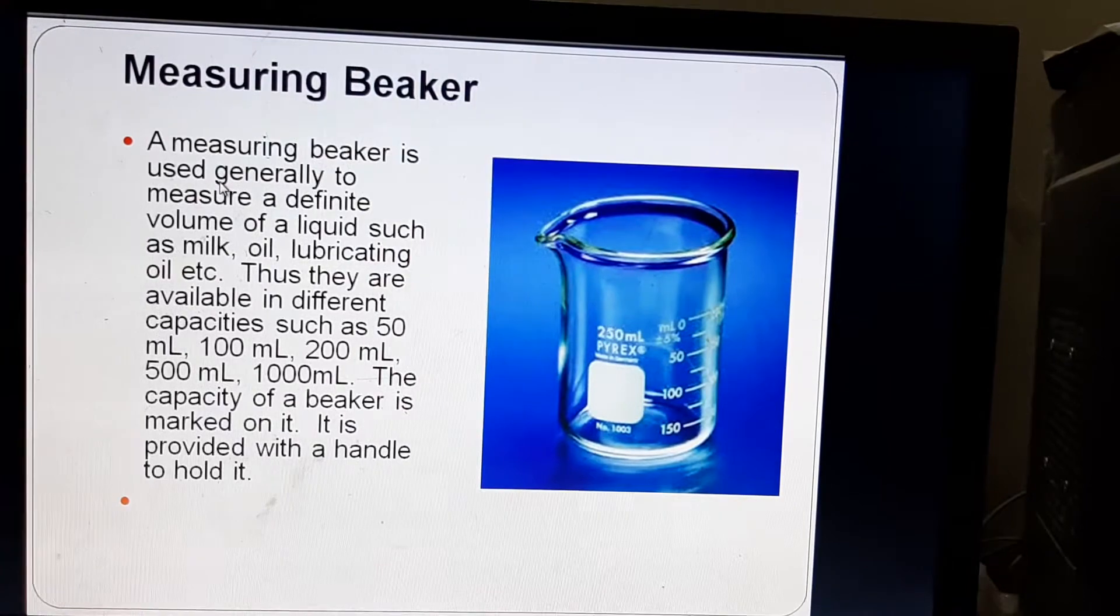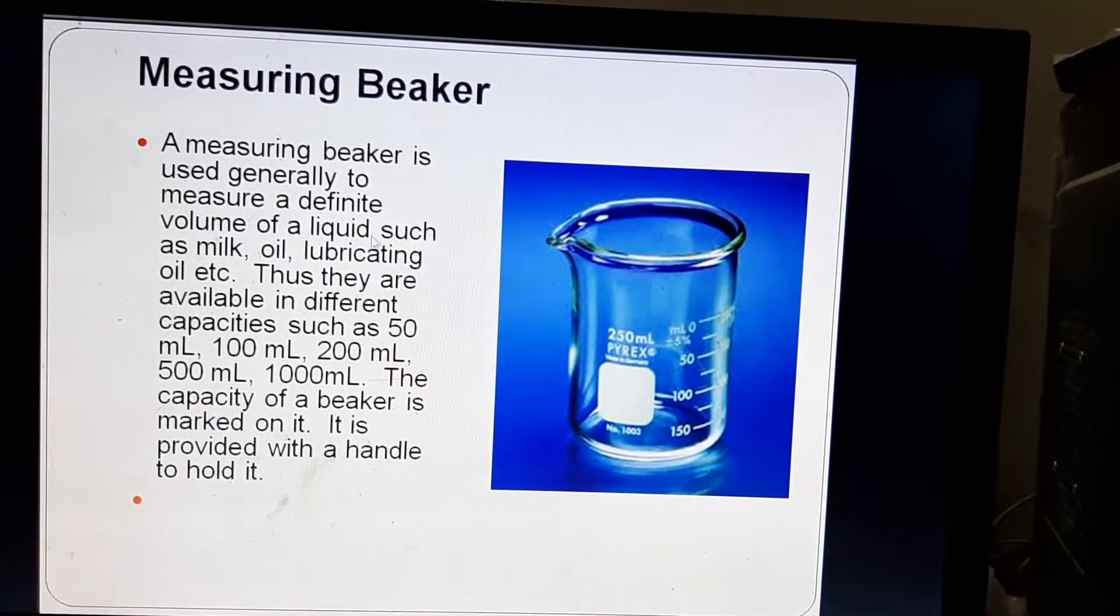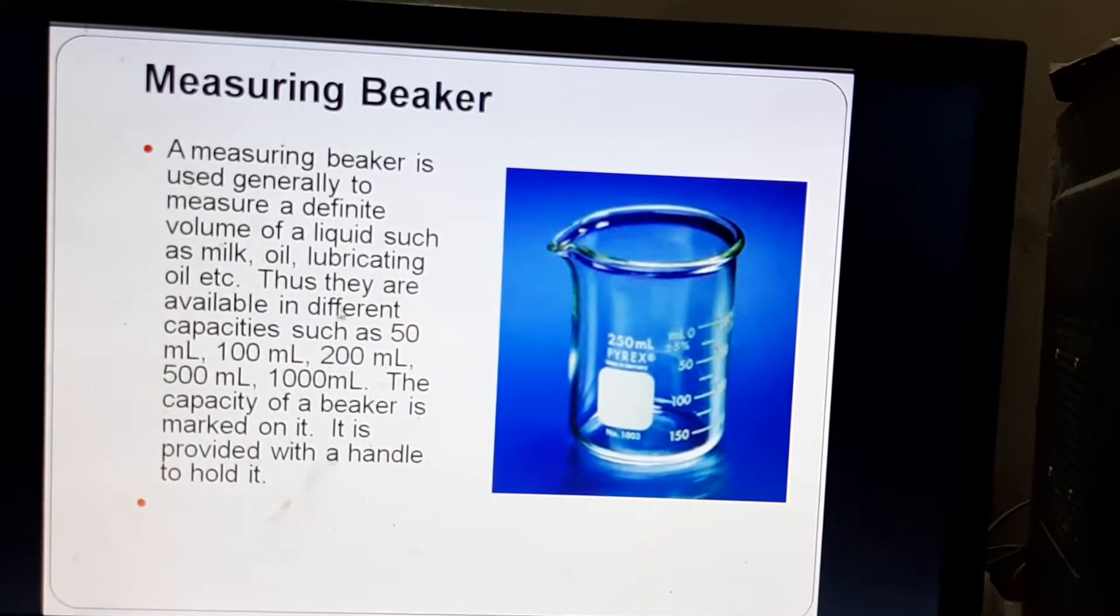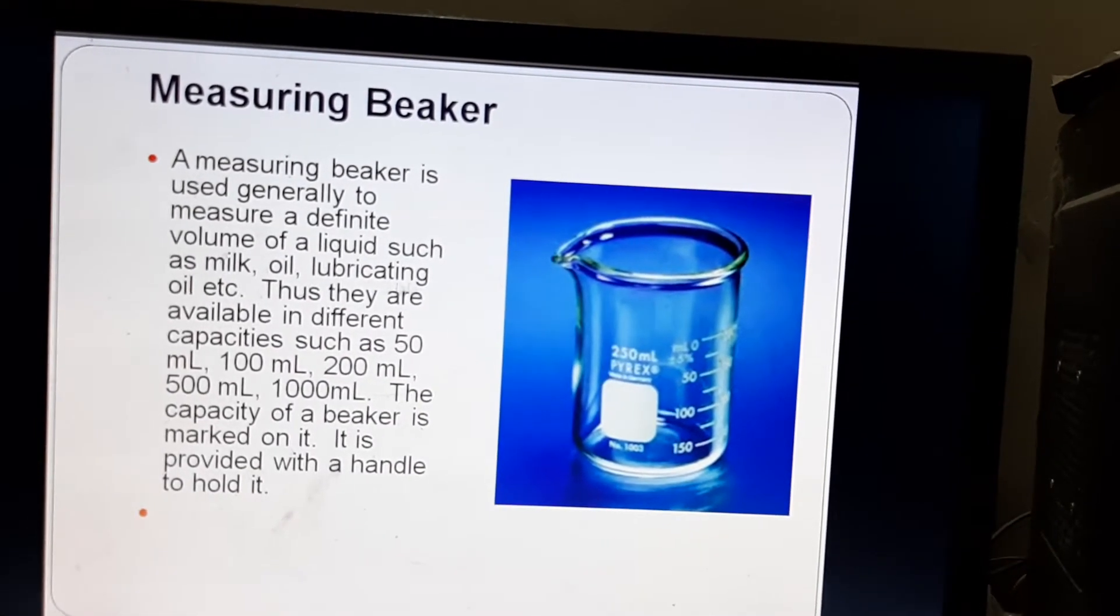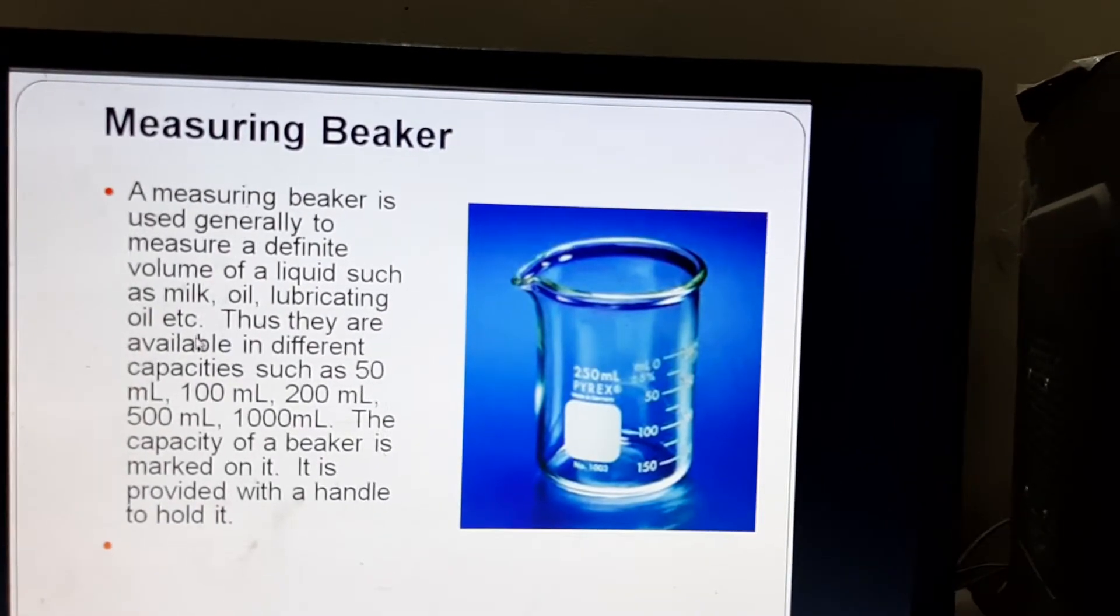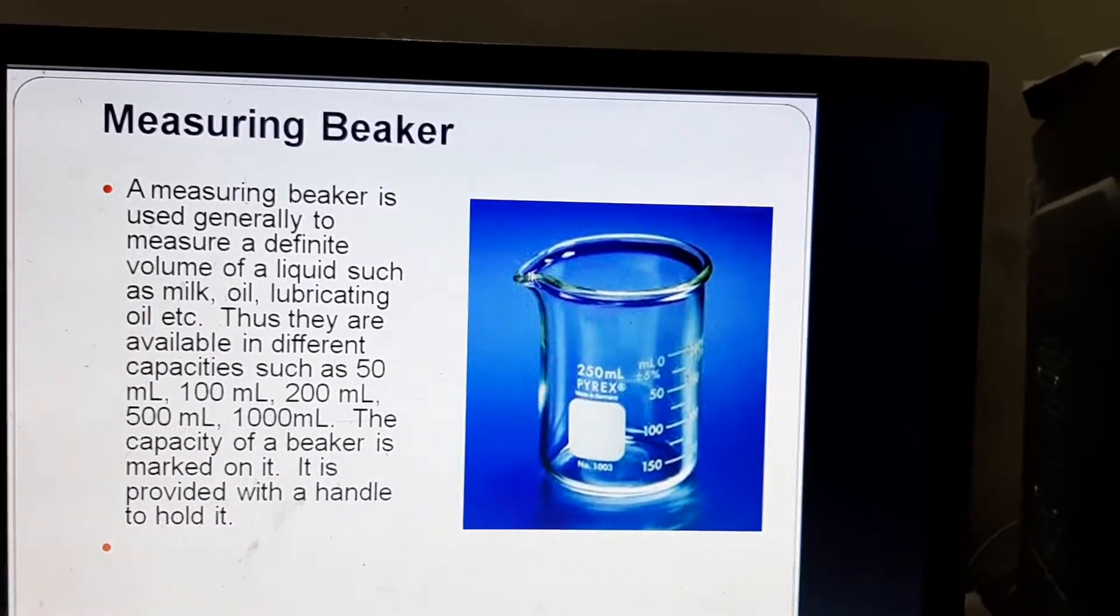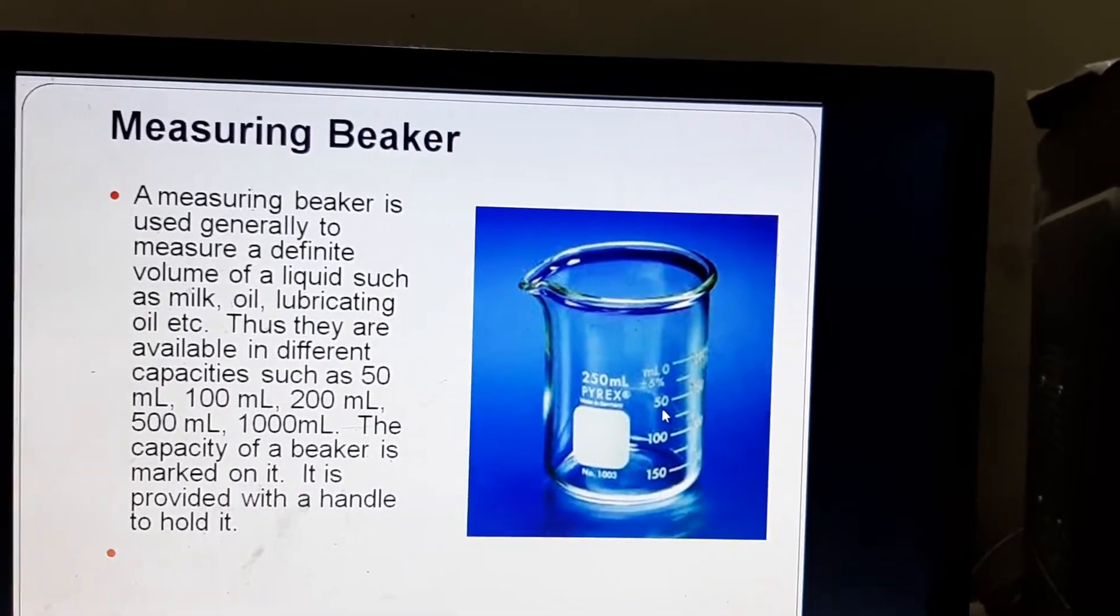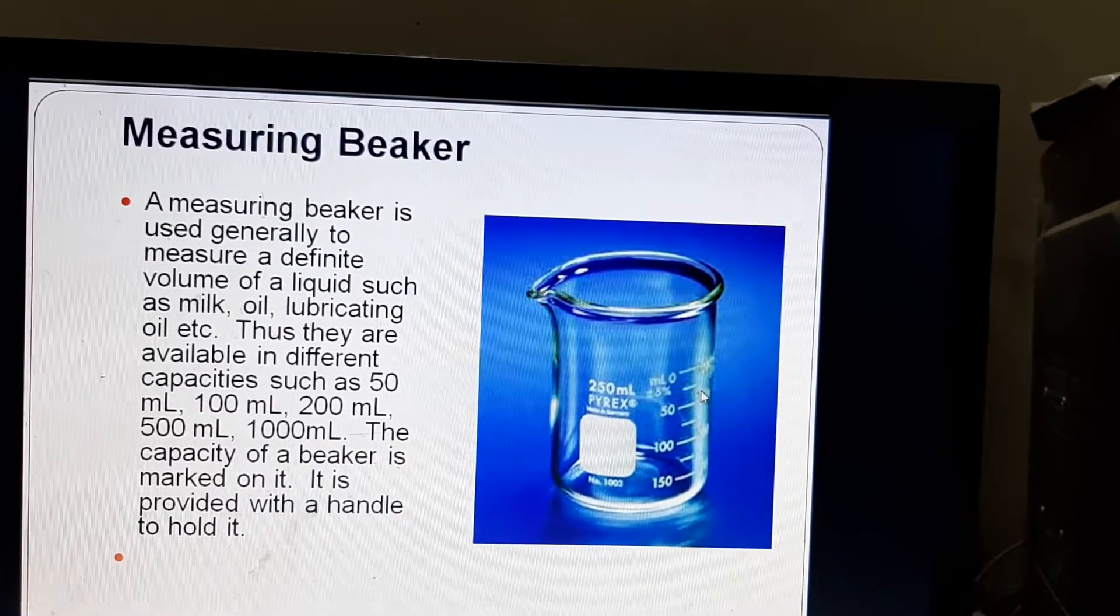A measuring beaker is used generally to measure a definite amount of liquid such as milk, oil, lubricating oil etc. So if you want to take out a certain volume, definite volume of liquid from another like maybe a bucket or a big container you want to take it out then you can just measure it with a measuring beaker.